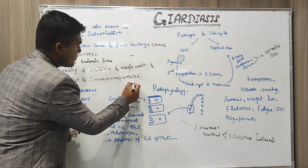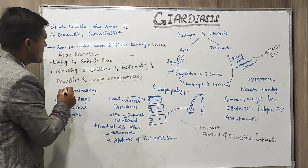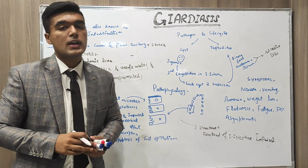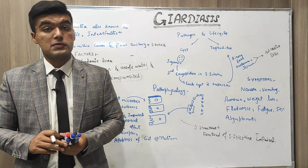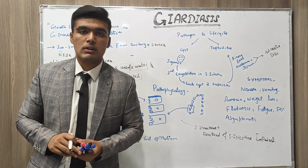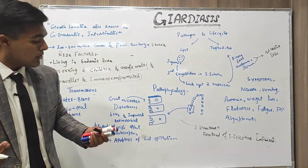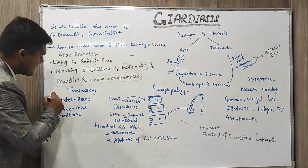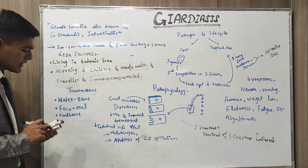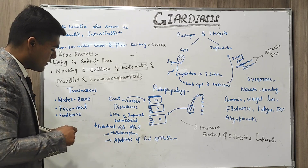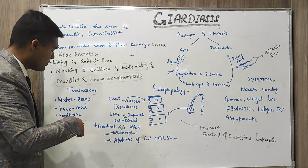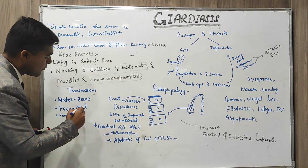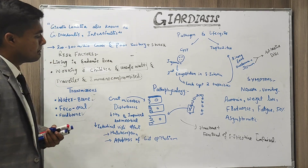Travellers and immunocompromised individuals have major chances of developing this condition. Transmission occurs by three main routes: fecal-oral route, foodborne, and waterborne.